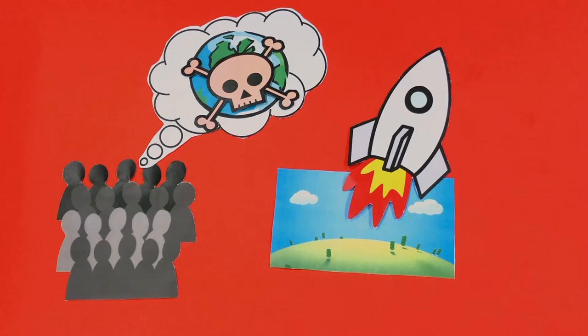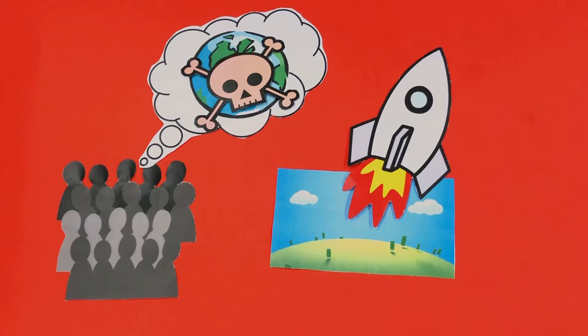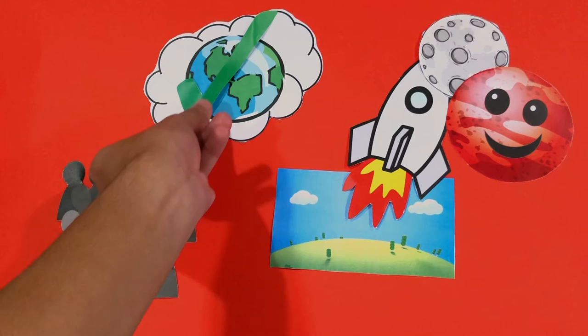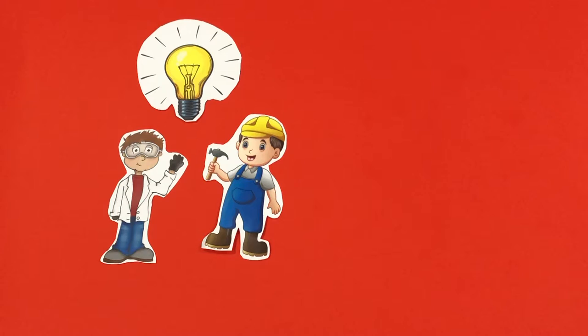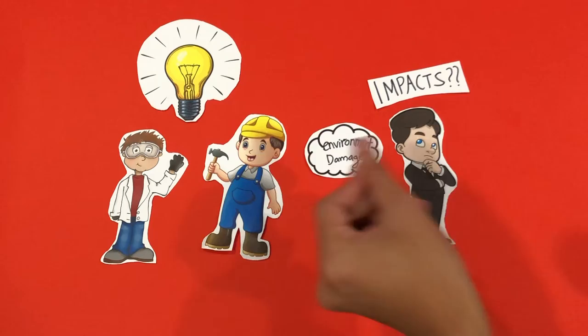So, to prepare for this disaster, some have opted to colonise space, whether it be the Moon or Mars, all to ensure the survival of the human species. However, there are also some who are optimistic and are focusing on developing new technology to reduce the impacts of overpopulation on Earth. To see what these innovations are, first, we have to understand the impacts of this exponential growth towards the Earth.